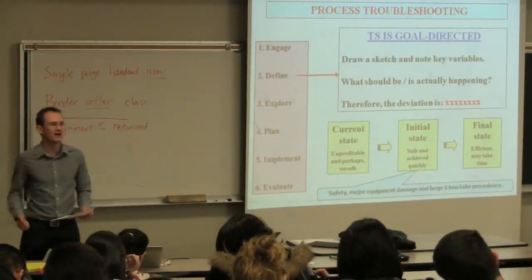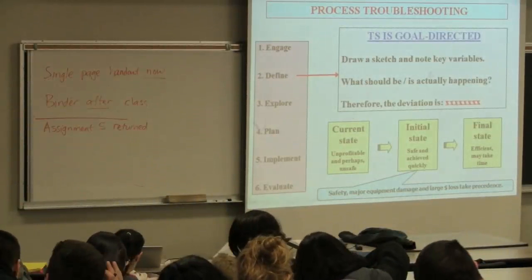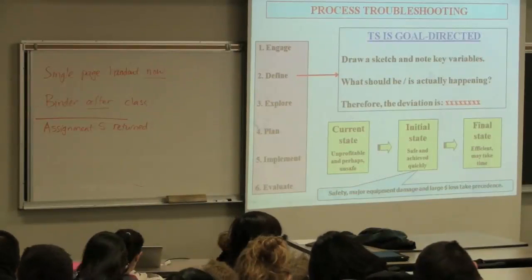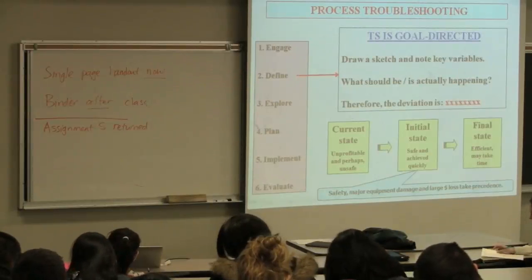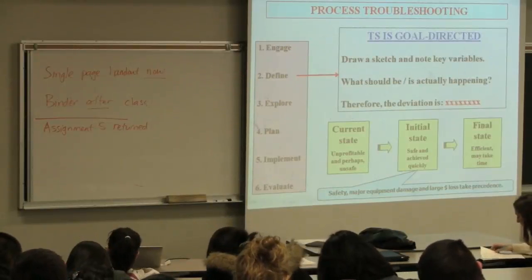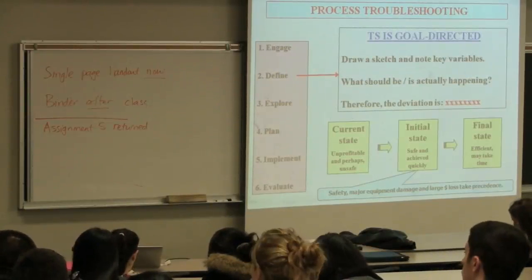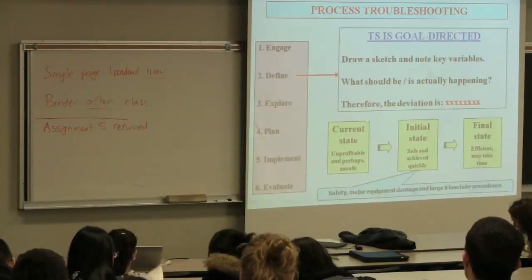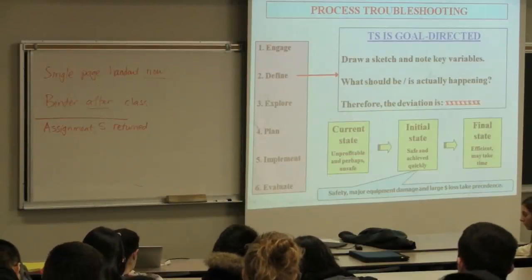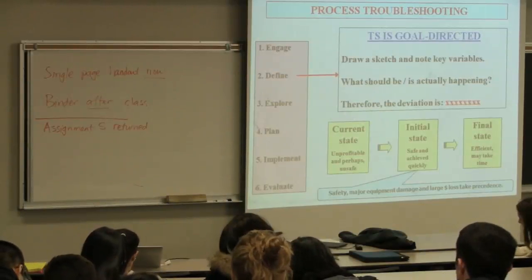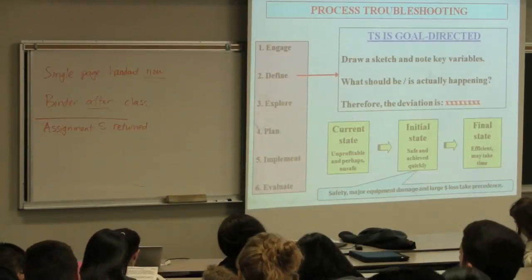What should be happening? What's the desired state we'd like to be at? A constant temperature in the output. The temperature should be at set point. From the flow diagram on the first page, TC1, which is that temperature we're measuring, is under feedback control. There must be a set point for it. We'd like to be at set point. That's where we want to be.